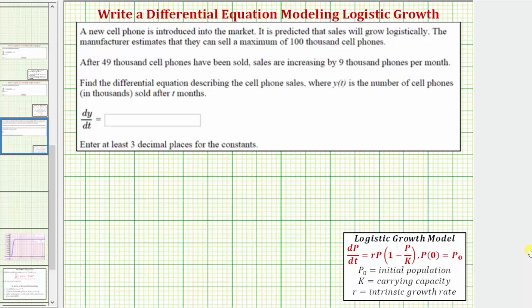Welcome to an example on how to write a differential equation that models logistic growth. A new cell phone is introduced into the market. It is predicted that the sales will grow logistically. The manufacturer estimates that they will sell a maximum of 100,000 cell phones.